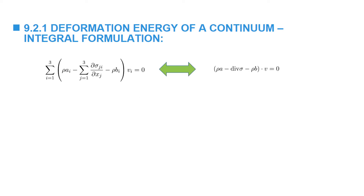We're going to use an integral formulation approach independent of the components and coordinate system chosen. The Eulerian form of the dynamic equilibrium equation is equivalent to the sum of forces — force equals mass multiplied by acceleration. The power of these forces is obtained by taking the dot product of these forces with the velocity. We then perform integration over the full domain to find the total power, which includes both static and dynamic terms.